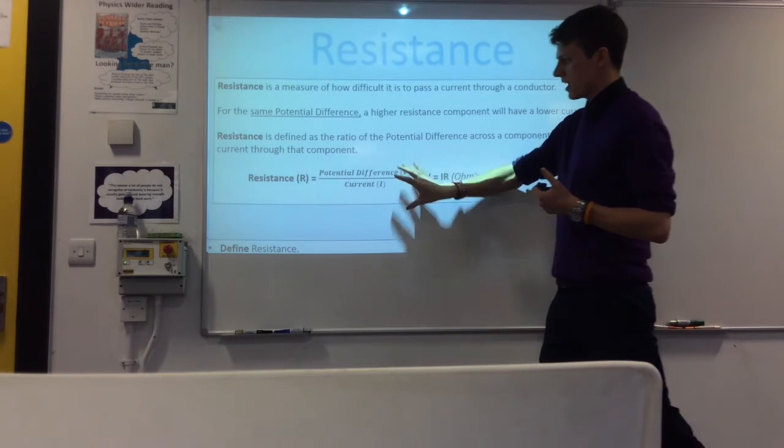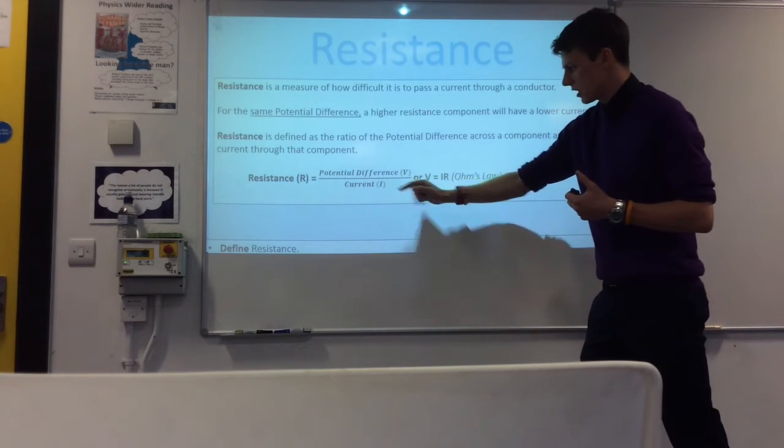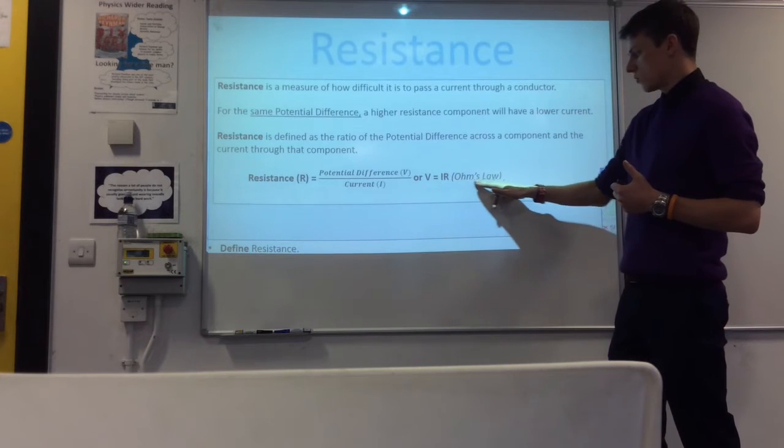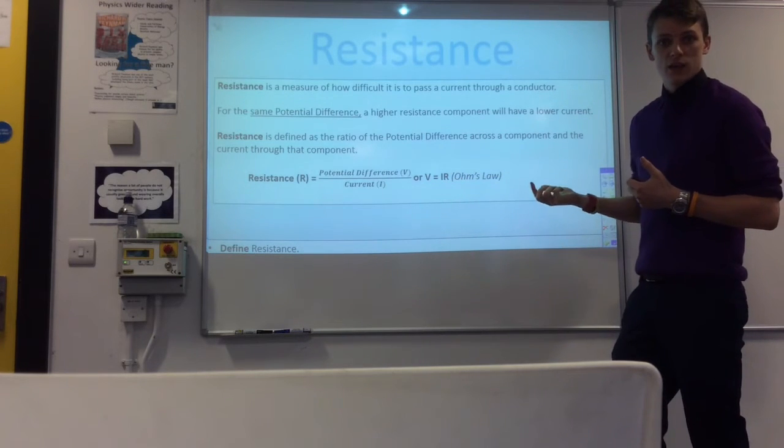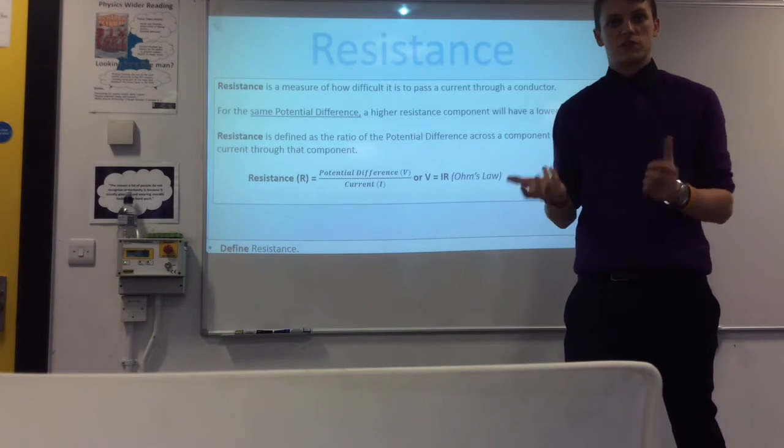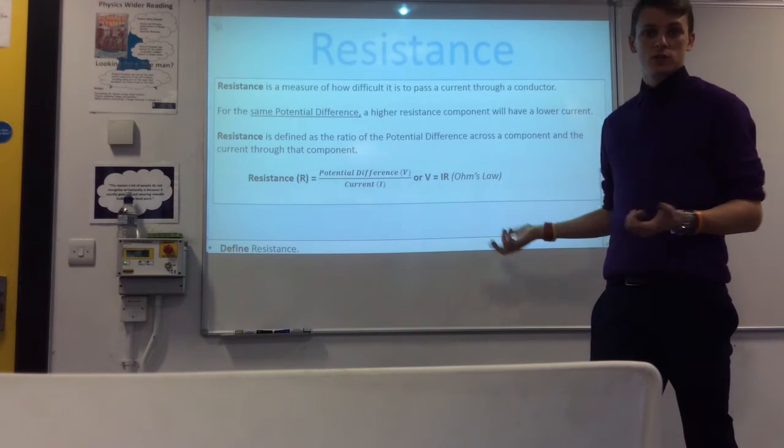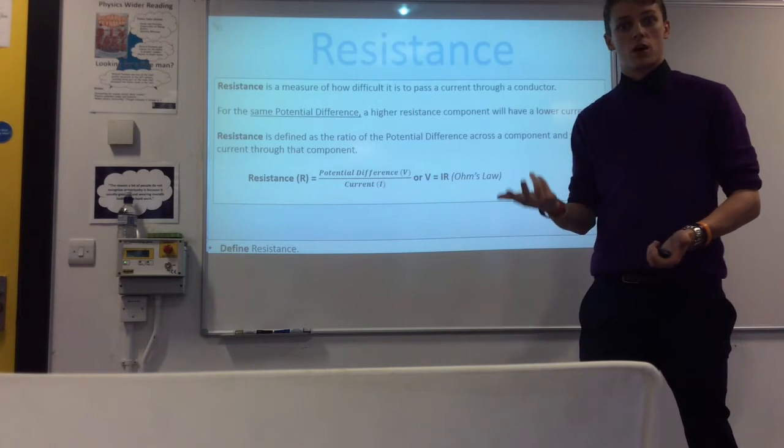You can often see that in equation form so you've got potential difference over the current and you'll often see it in the form of V equals IR which is called Ohm's law after Georg Ohm, a famous physicist. So lots of physicists get units named after them. This is his law. He also has the unit of resistance as well, the Ohm.